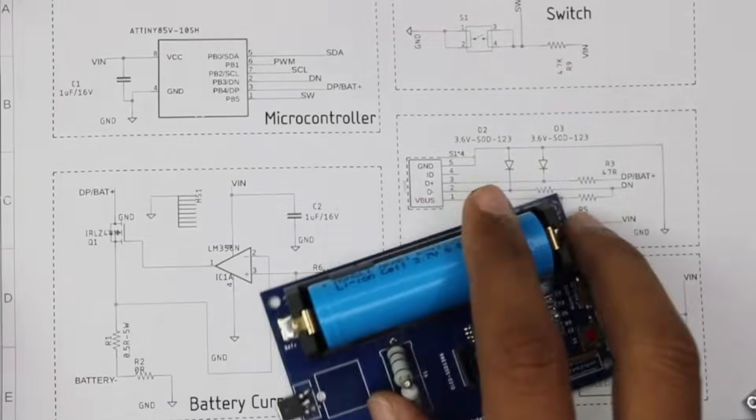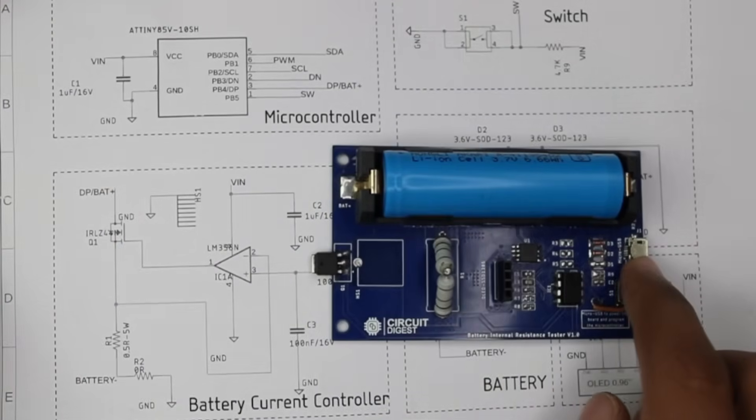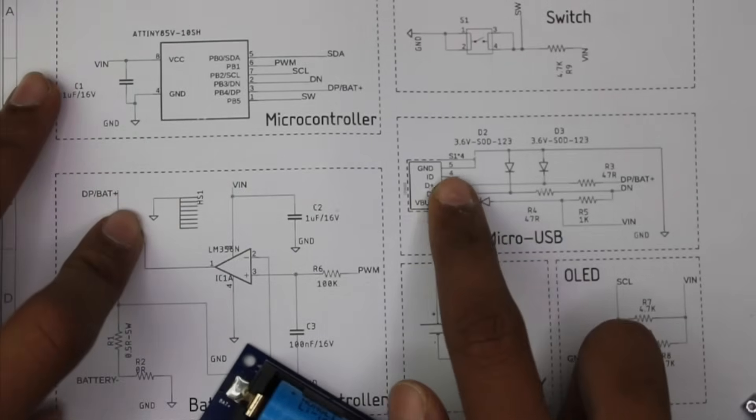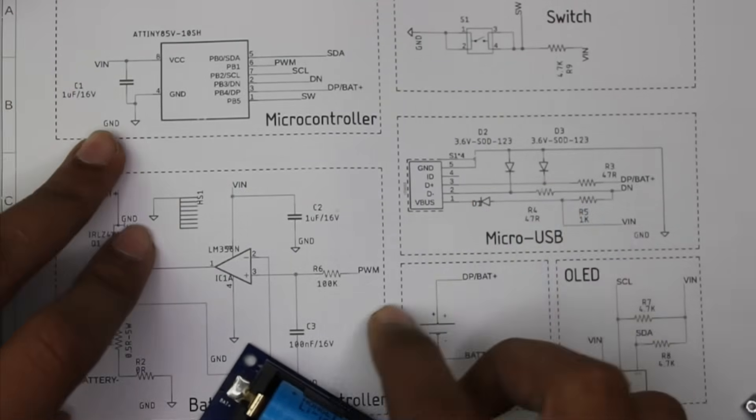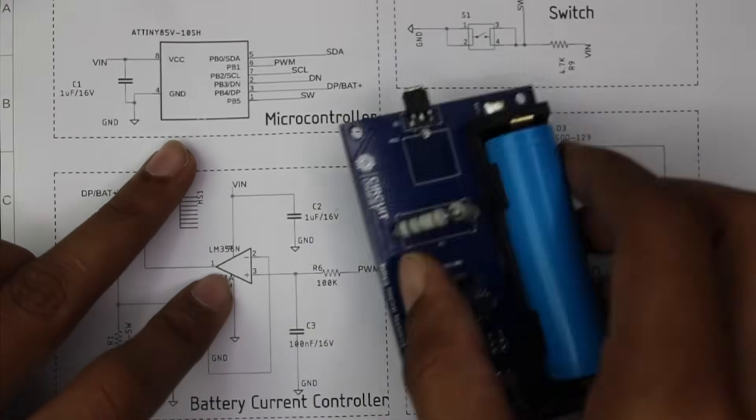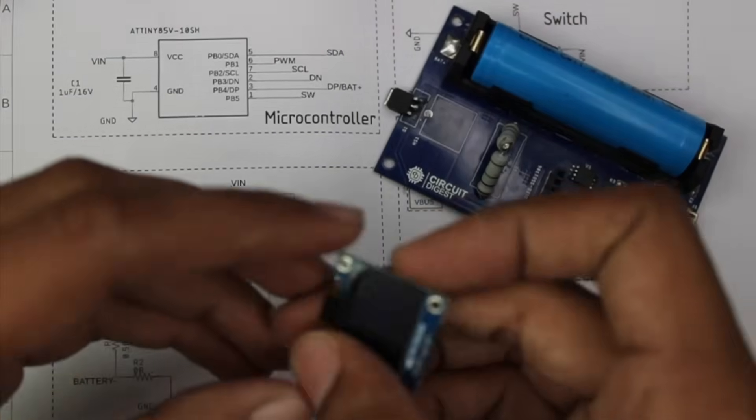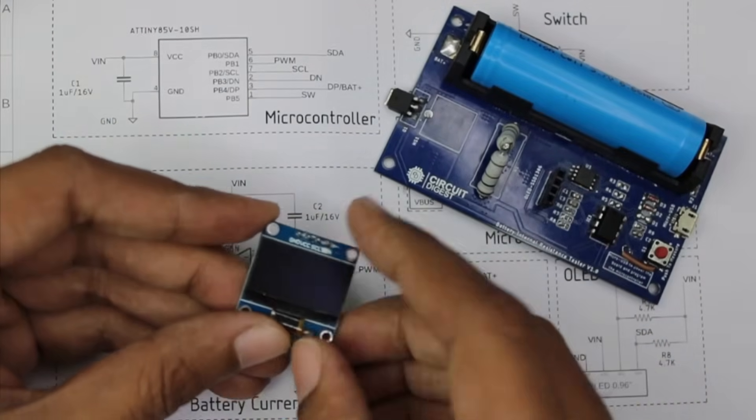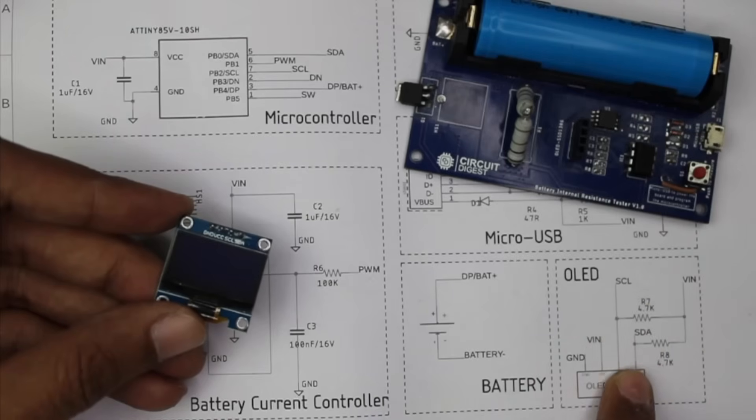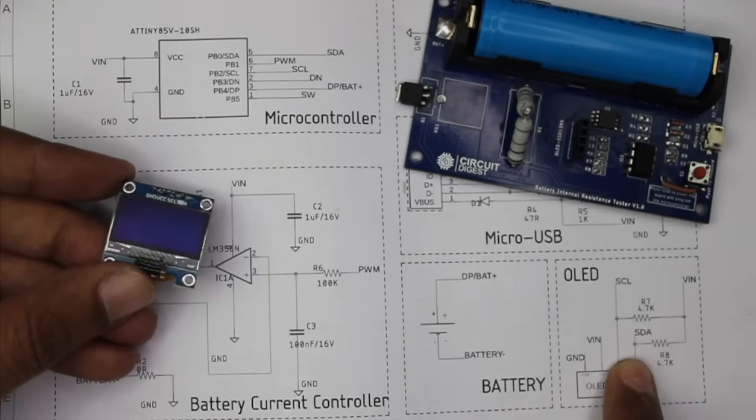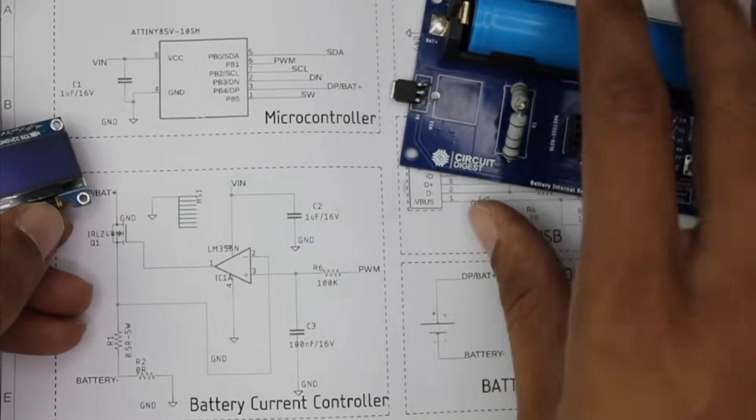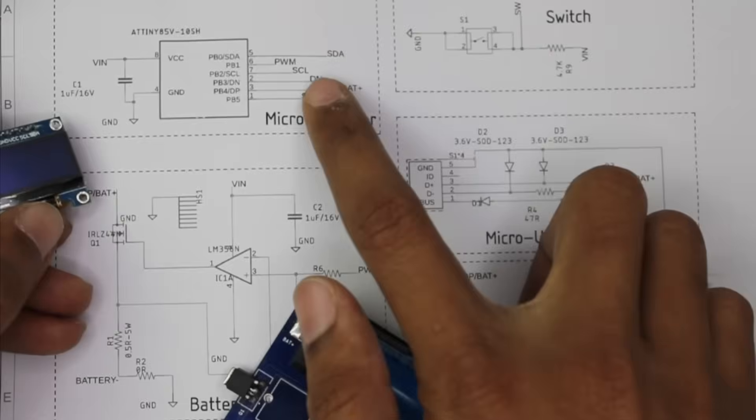The ATtiny85 is powered by this VIN pin which comes from a USB jack, so this board needs 5 volt USB power to operate. The controller is powered by the 5 volt pin from the micro USB port, and we have an OLED display to show all the values. The OLED works with I2C communication: four pins, two for power and two for communication. The SCL pin is serial clock and SDA is serial data, both connected to our microcontroller.